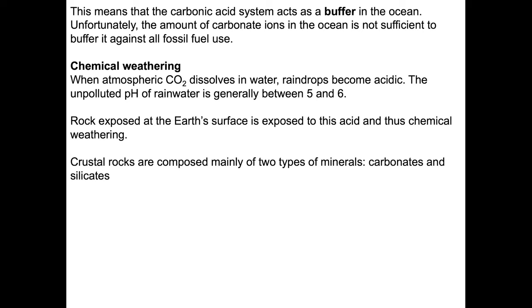When atmospheric CO2 dissolves in water, raindrops become acidic — they become carbonic acid. This carbonic acid results in rainwater with a pH of about five to six; this is unpolluted pH. We can generate rainwater with lower pH than this. Rock exposed at the Earth's surface is exposed to this acid and therefore to chemical weathering. Crustal rocks are composed primarily of two types of minerals: carbonates and silicates.